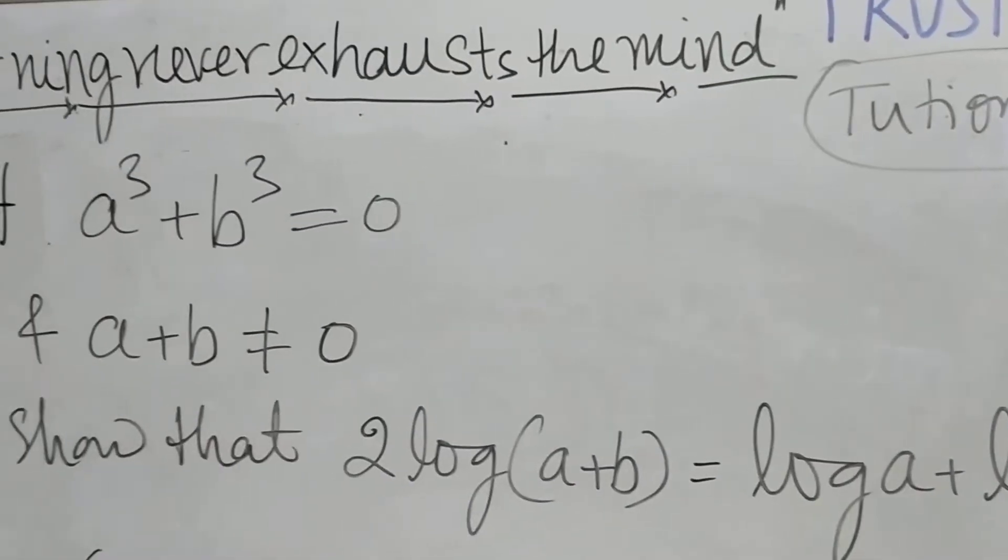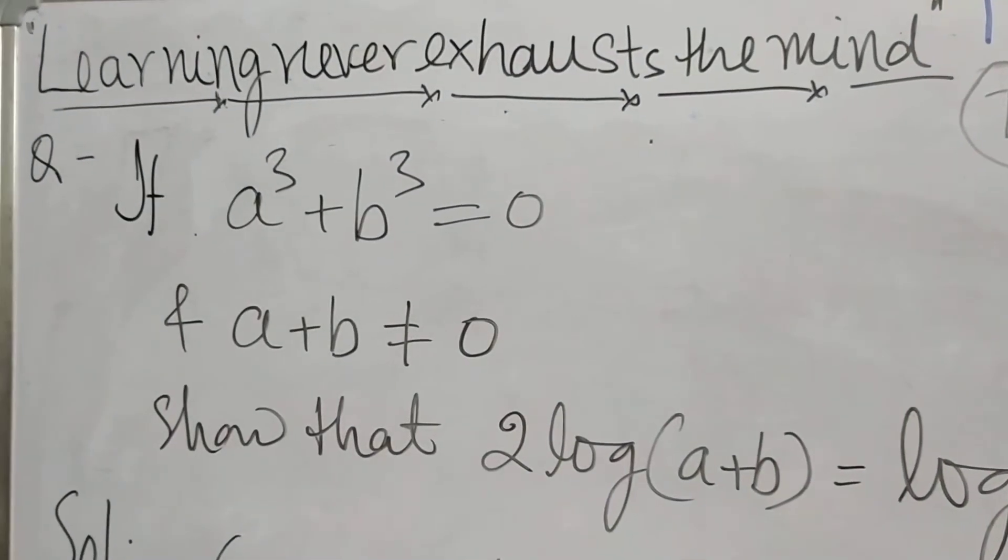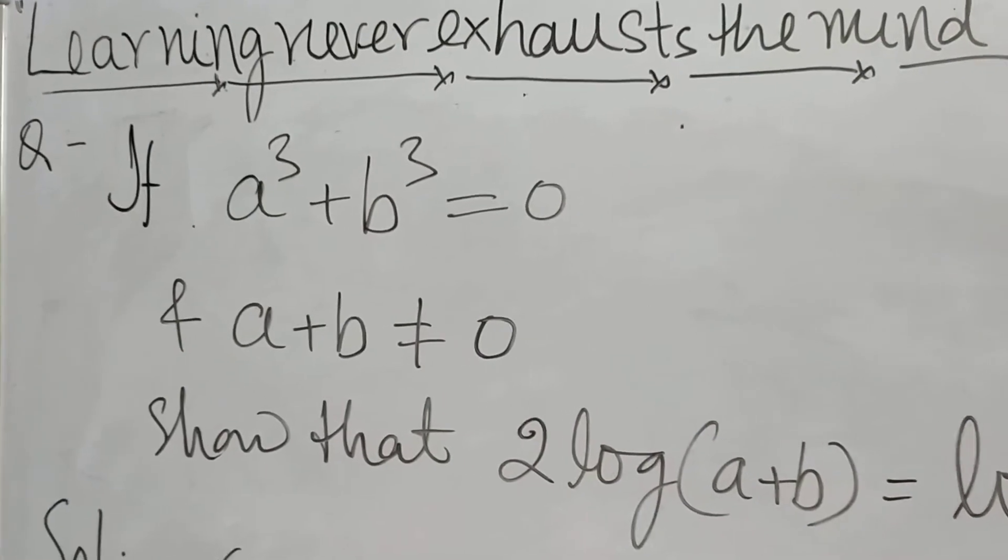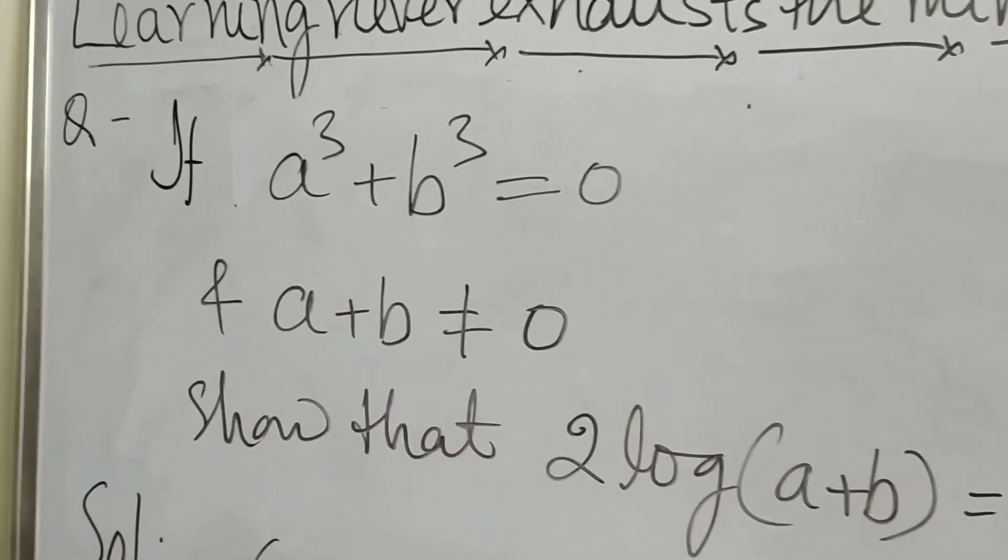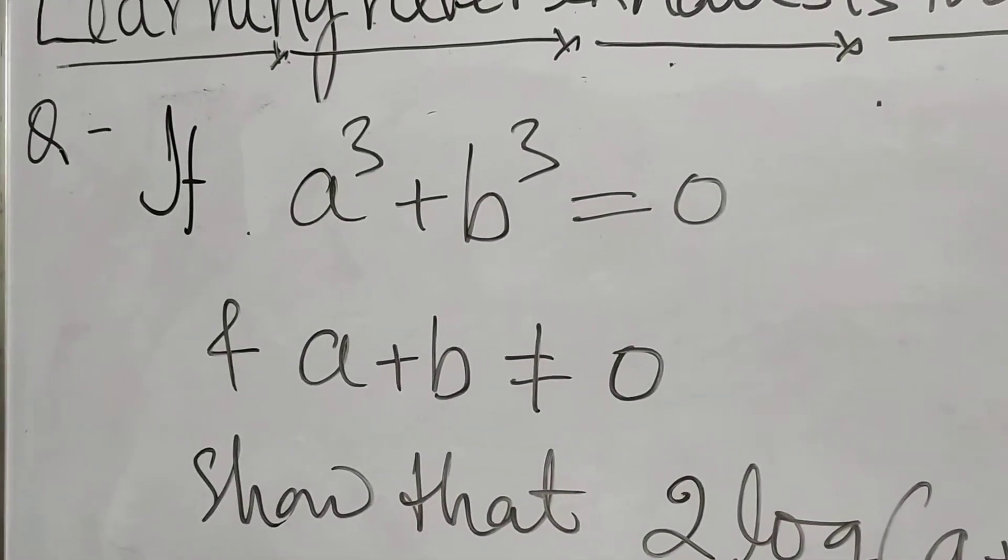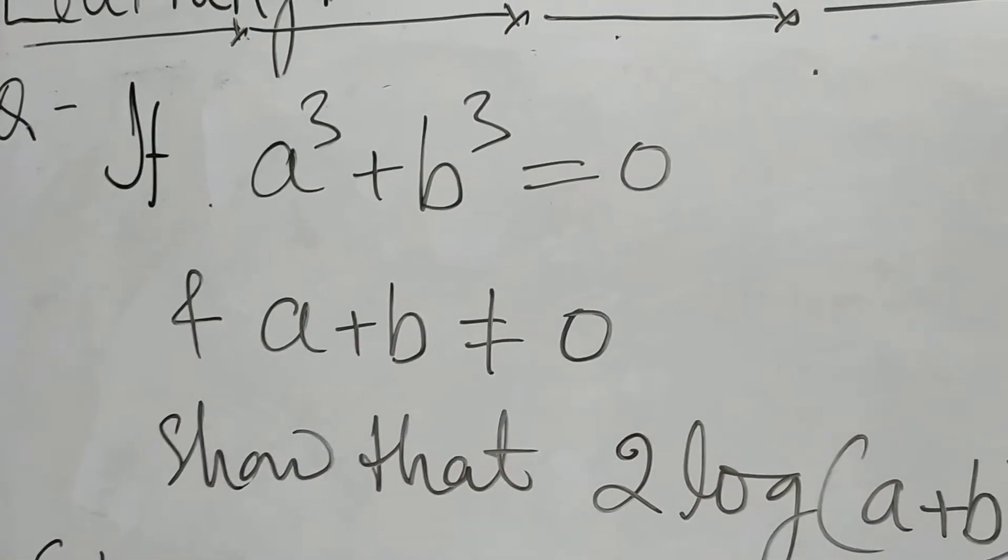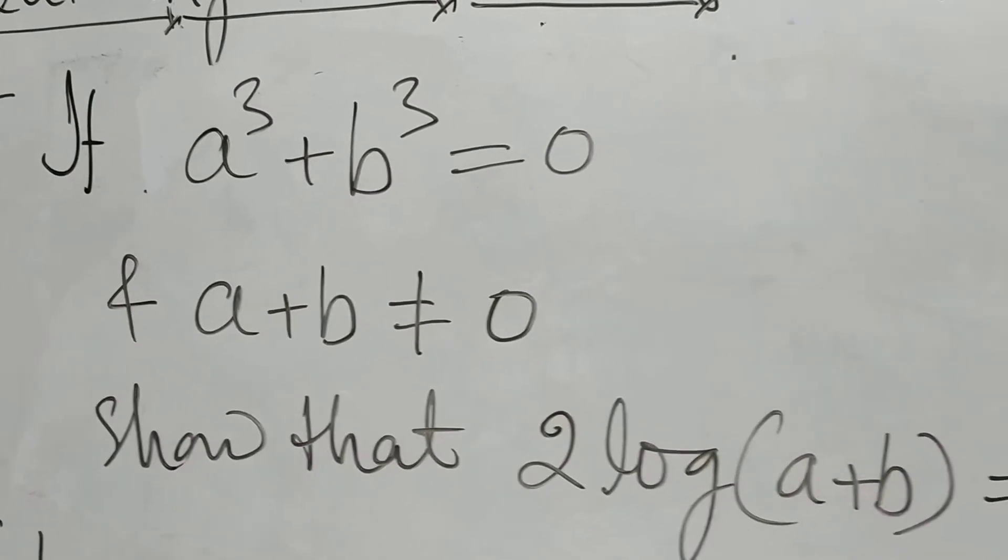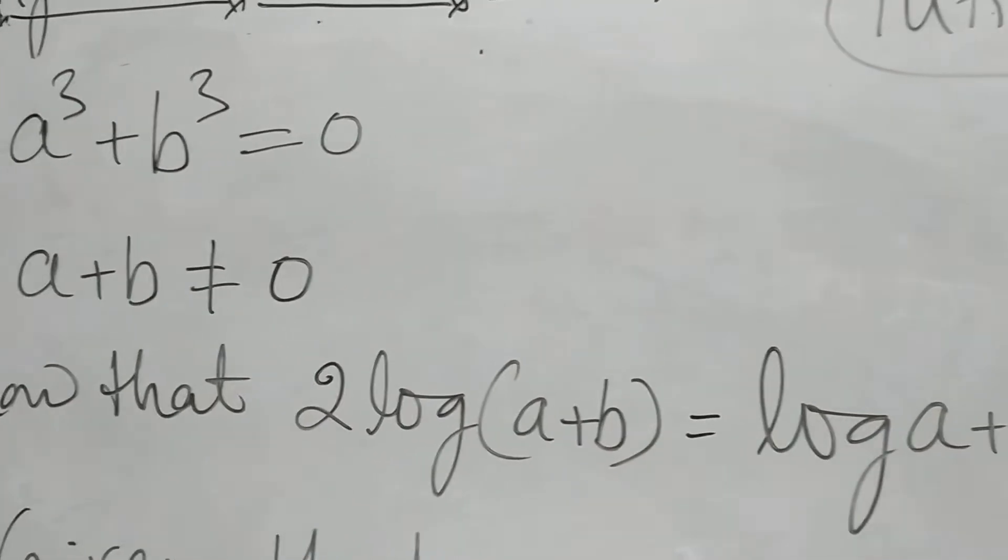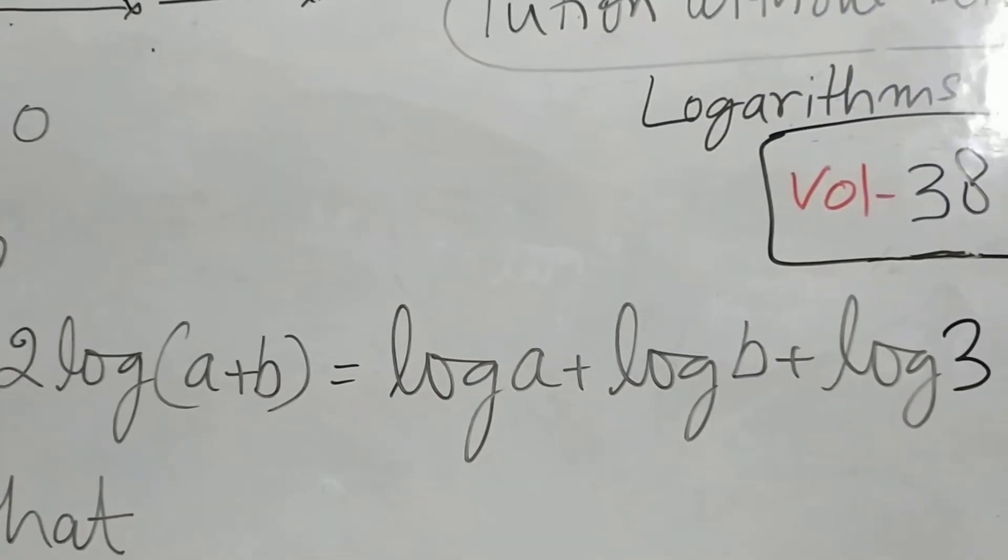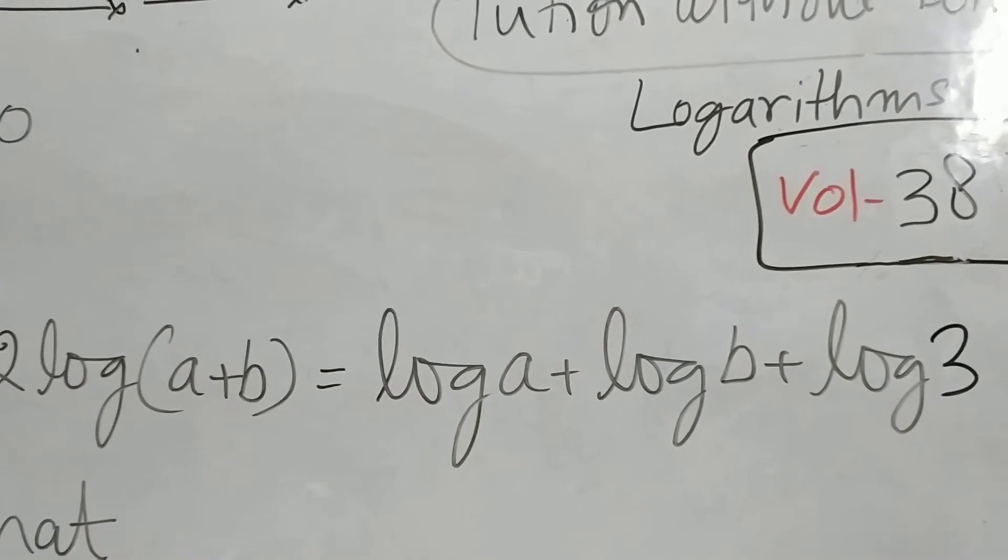Here in this session we will discuss a different type of problem. The question given is: if a³+b³=0 and a+b≠0, then show that 2log(a+b)=log a+log b+log 3.